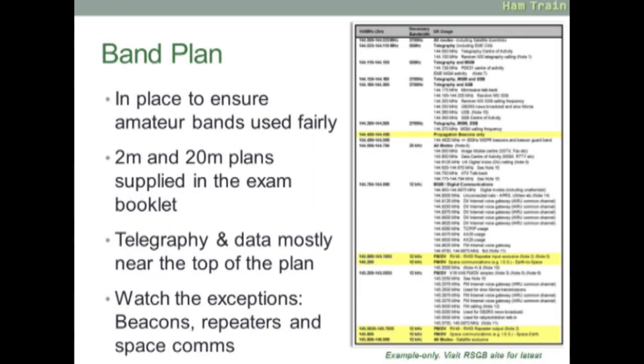You're also given the band plan in the exam. This includes the 2 meter and 20 meter bands. Telegraphy or Morse code typically is at the top of each band plan, followed by data modes and then voice modes. On screen now is the 2 meter band plan. You'll see 144.4 is where the propagation beacons live, then the repeater input and output frequencies, and the space frequencies like the International Space Station.